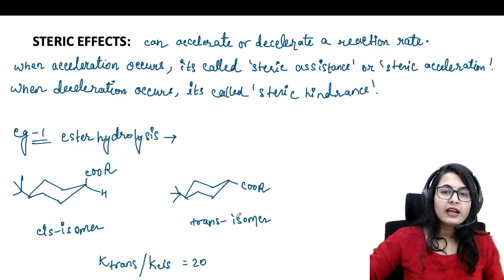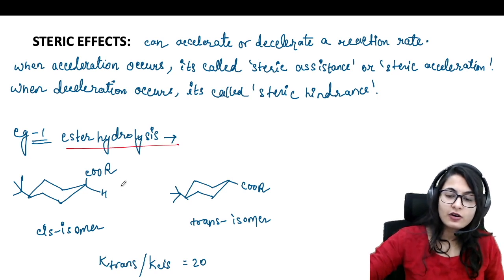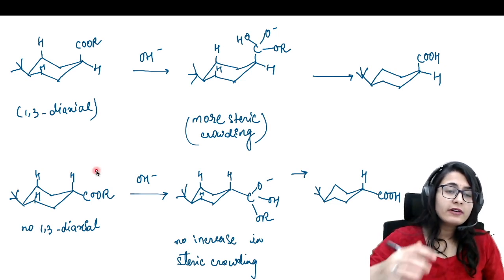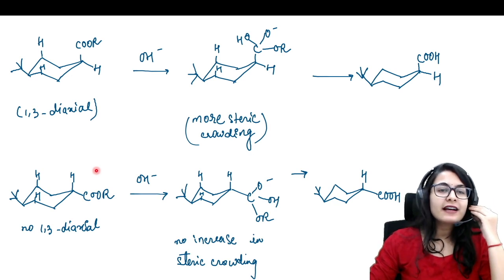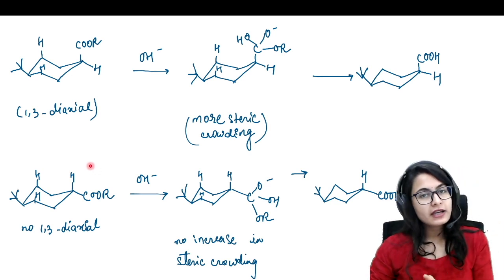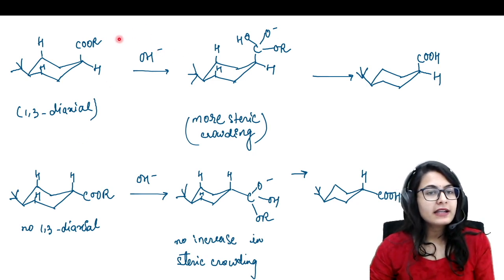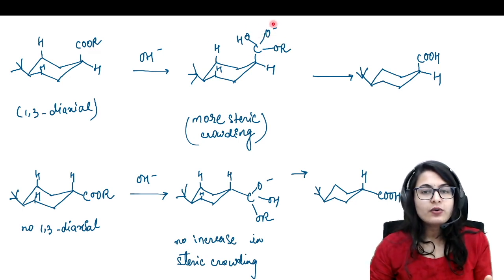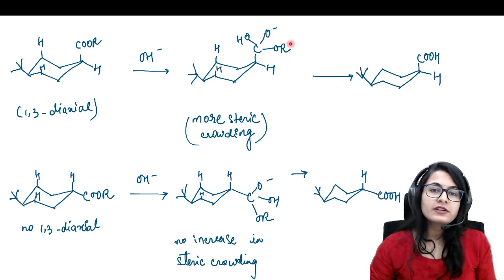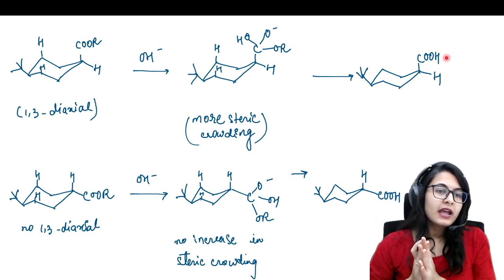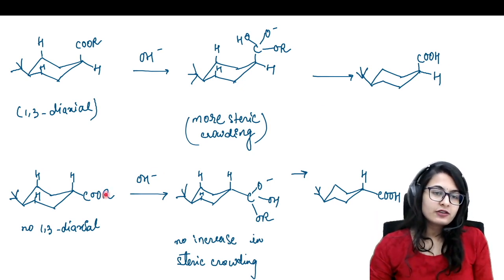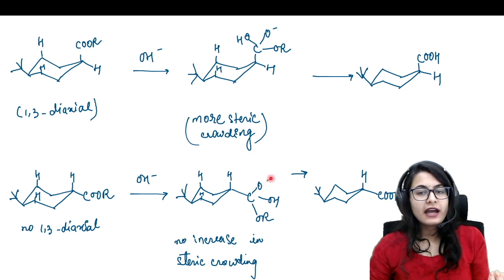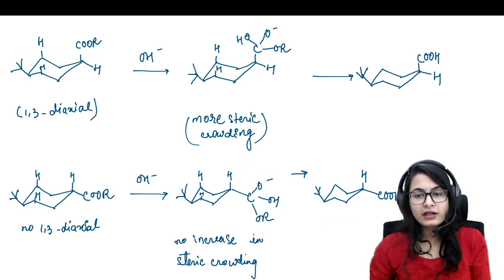Now how is that happening? We are talking about the ester hydrolysis of these two cis and trans isomers. When we talk about the mechanism, it's actually very simple. The ester hydrolysis as usual is going to go through a tetrahedral intermediate. The OH⁻ is going to attack over the carbonyl of the ester, giving you a tetrahedral intermediate. When the O⁻ falls back, the alkoxy group is going to get removed and you get the resultant acid. The same is going to happen in the trans isomer: OH⁻ attacks over the carbonyl, gives a tetrahedral intermediate, and when the O⁻ falls back and the methoxy removes, you get the acid.